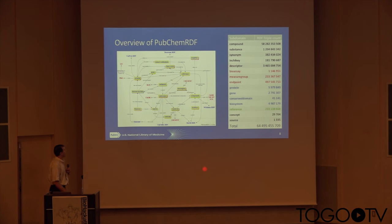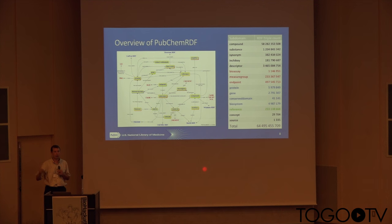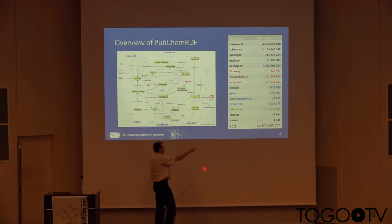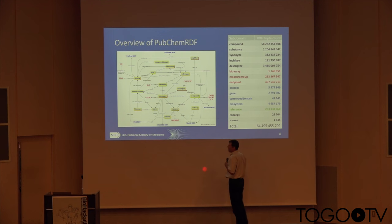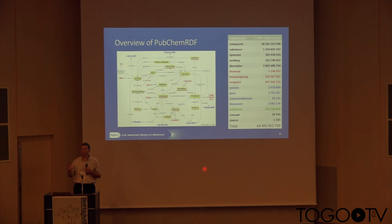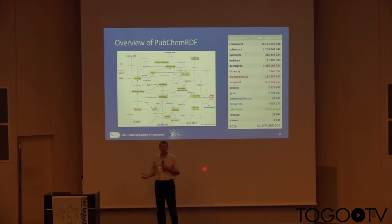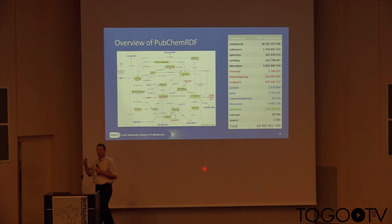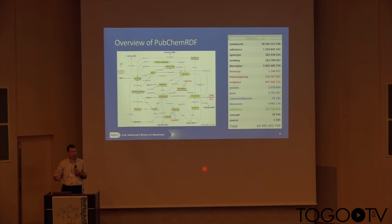In PubChem RDF, we have primary subdomains covering areas such as pathways, genes, publications, chemicals, chemical substance providers, and concept domains. We have essentially 65 billion triples, and we're trying to keep this number roughly constant — once you go beyond 100 billion triples, your ability to use standard hardware goes away. Every new version of PubChem RDF finds ways to economize the number of triples. Notably, the compound domain has 50 billion triples, mostly chemical-chemical association similarity links — on average 2,000 to 4,000 such links across 60 million unique small molecules.